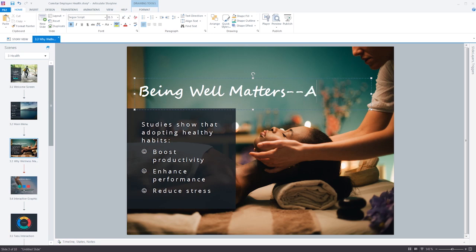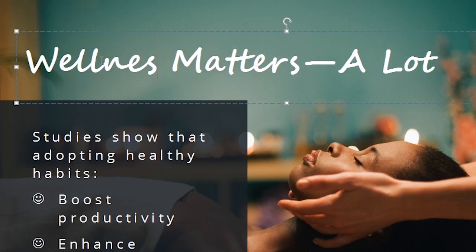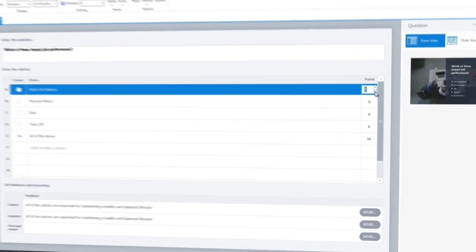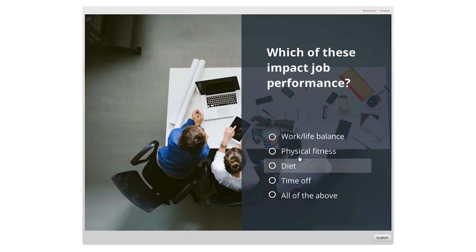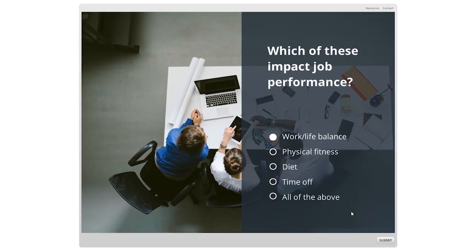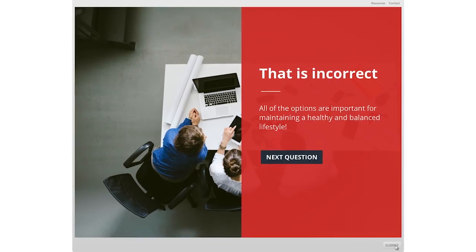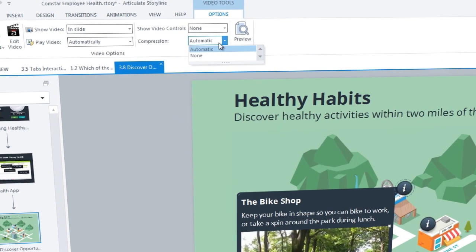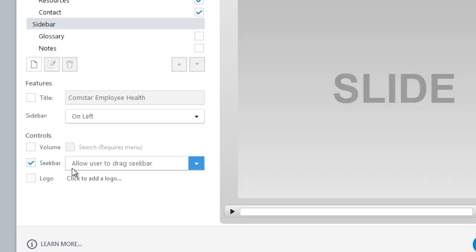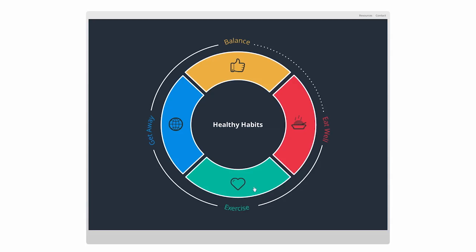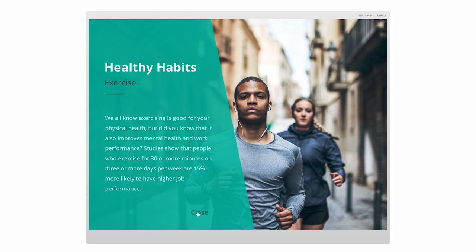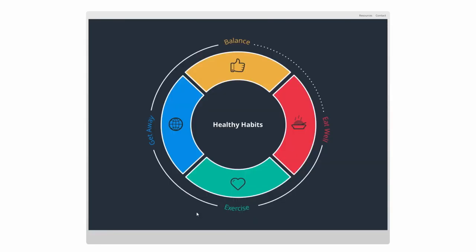Perfect your text with custom characters and letters that change shape based on their position. Get more control over the way you assess learners by subtracting points for wrong answers. And fine-tune how your content is experienced with uncompressed video and read-only seek bars, and by showing navigation buttons only after learners complete an activity.